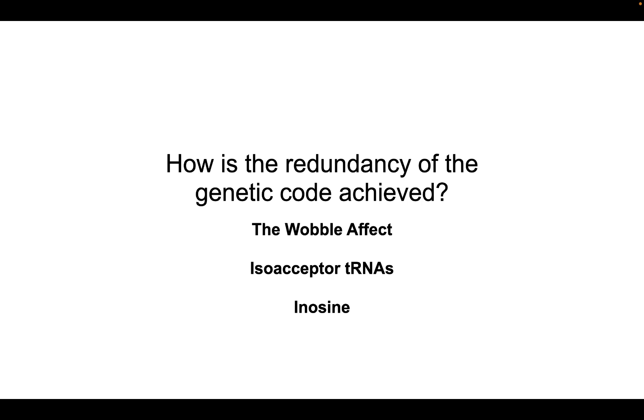In this small talk, we're going to look at the mechanisms by which redundancy is achieved in the genetic code. There are three mechanisms by which this happens: the wobble effect, isoacceptor tRNAs, and inosine, which is kind of like another form of wobble effect.